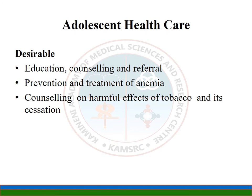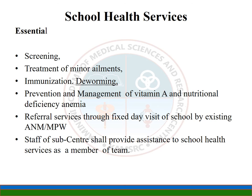Desirable services for adult health care include education, counseling, prevention and treatment of anemia, and counseling on harmful effects of tobacco. School health services include screening, treatment of minor ailments, immunization, monitoring child development, prevention and management of vitamin A and nutritional deficiency, and anemia. Services are provided through fixed-day visits to the school by the existing ANM or male multipurpose health worker. The sub-center staff shall provide assistance to school health services as members of a team.